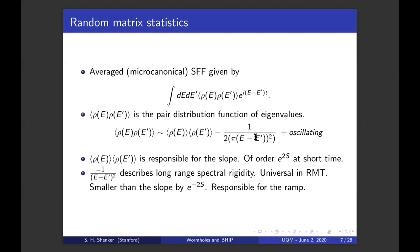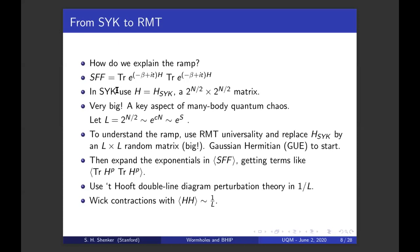This is universal in random matrix theory. And there's an oscillating part that I'm not going to talk about that's responsible for the plateau. Now this universal part, this spectral rigidity part is small of order one. It's smaller than the slope part by an exponential factor, e to the minus two s. And it is responsible for the ramp.